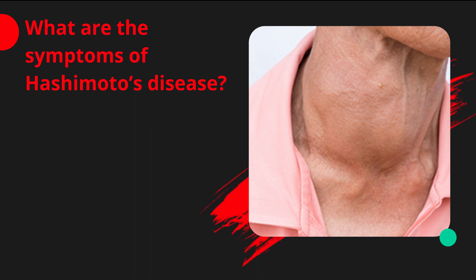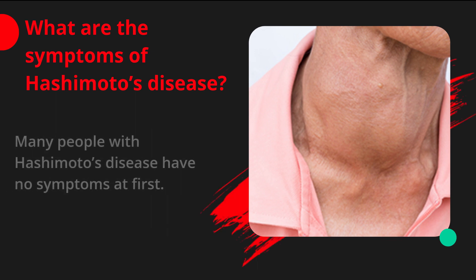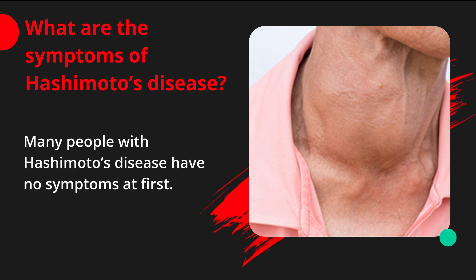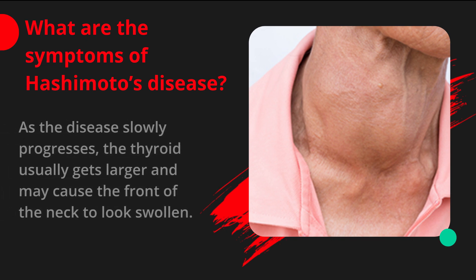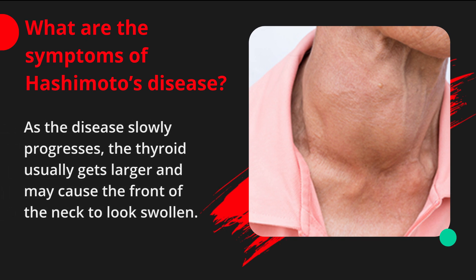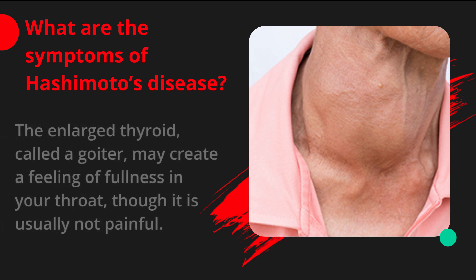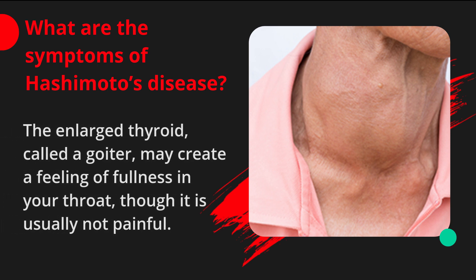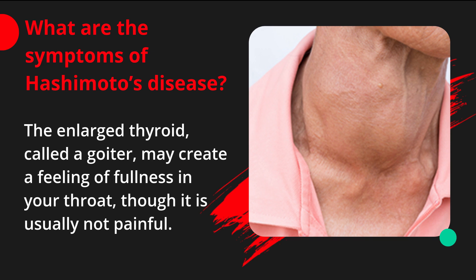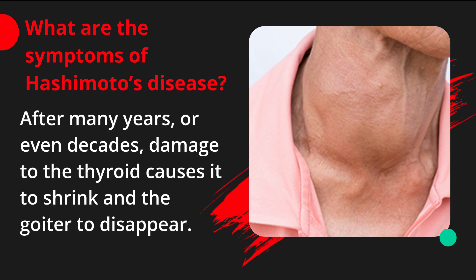What are the symptoms of Hashimoto's disease? Many people with Hashimoto's disease have no symptoms at first. As the disease slowly progresses, the thyroid usually gets larger and may cause the front of the neck to look swollen. The enlarged thyroid, called a goiter, may create a feeling of fullness in your throat, though it is usually not painful. After many years, or even decades, damage to the thyroid causes it to shrink and the goiter to disappear.